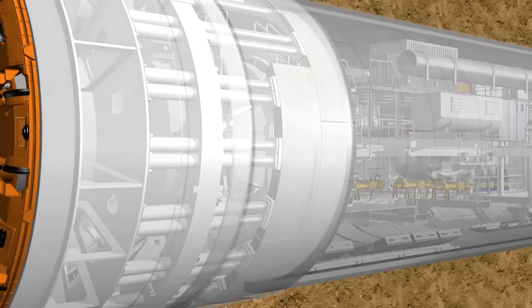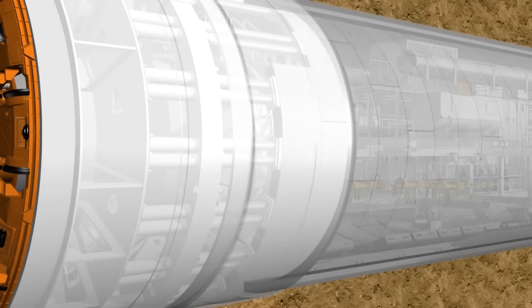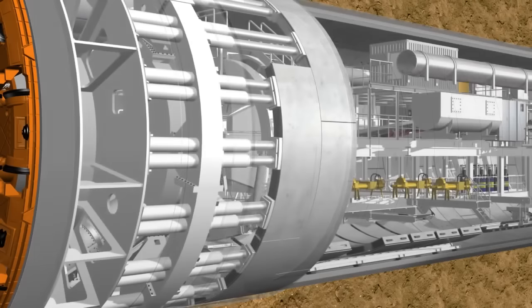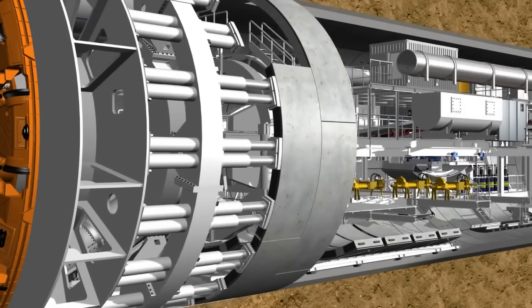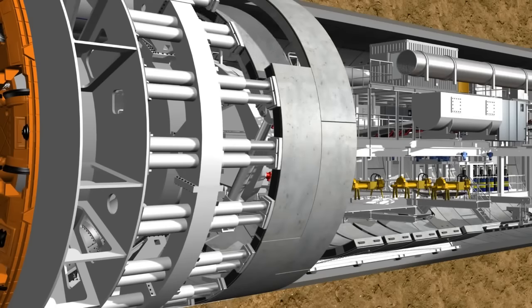During this process, machine and tunneling personnel are protected by the shield's skin against the earth pressure and any possible groundwater. In this way, the lining segments are installed on each side alternately.